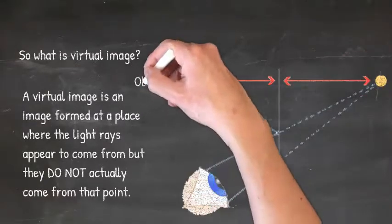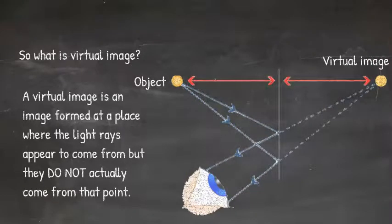If you extend the rays that go into the eye to the other side of the mirror, you will see they converge or come together to form an image. This is a virtual image because the light rays never actually go onto the right hand side of the mirror, which is why they are shown with a dotted line.